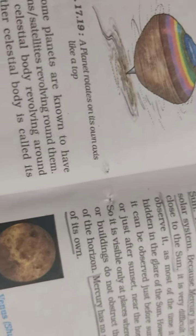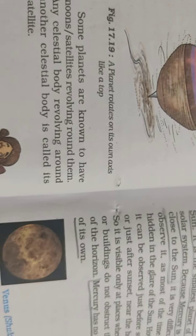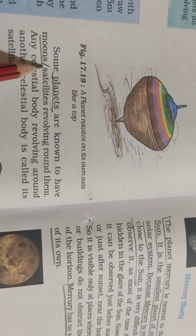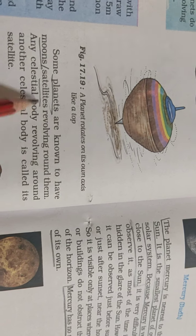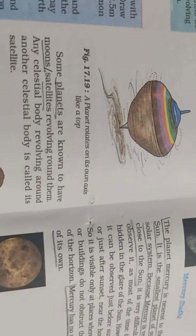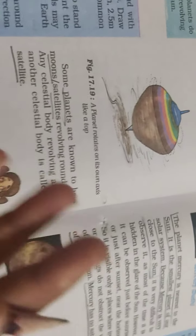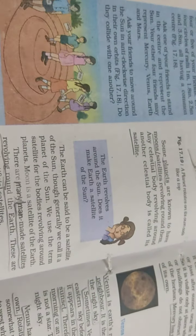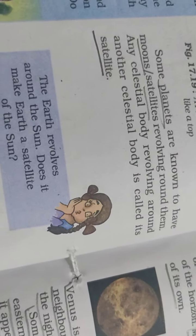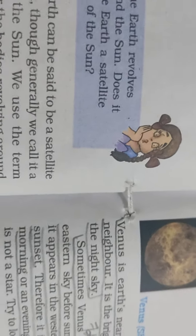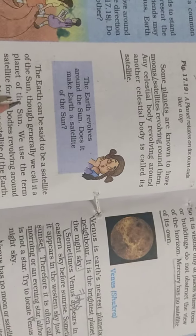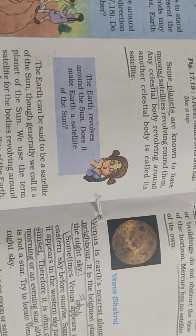Some planets have moons and satellites. These celestial bodies that move around planets are called satellites. Some satellites are natural, like the Moon, and some are man-made.